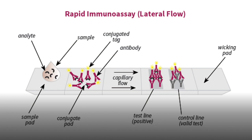The buffer continues to flow, and any unattached antibodies — those not bound to antigen — will attach to another set of secondary antibodies specific for antibodies rather than our antigen. This is the control line, and it tells us that our test is working. Finally, all remaining flow is trapped by the wicking pad at the end.